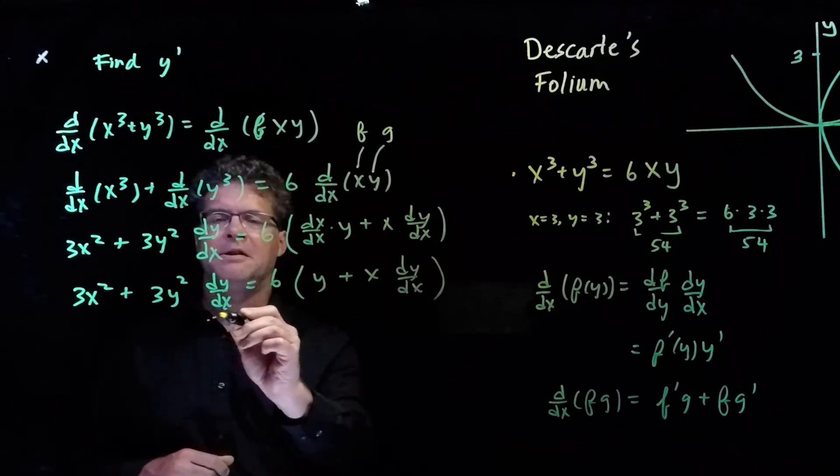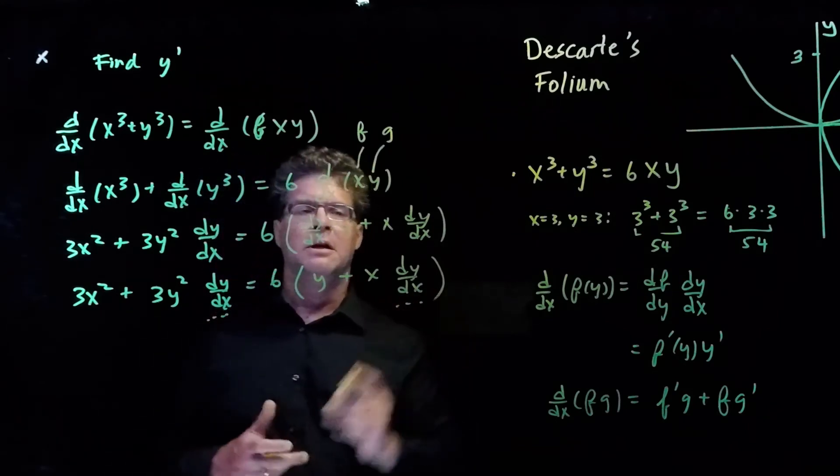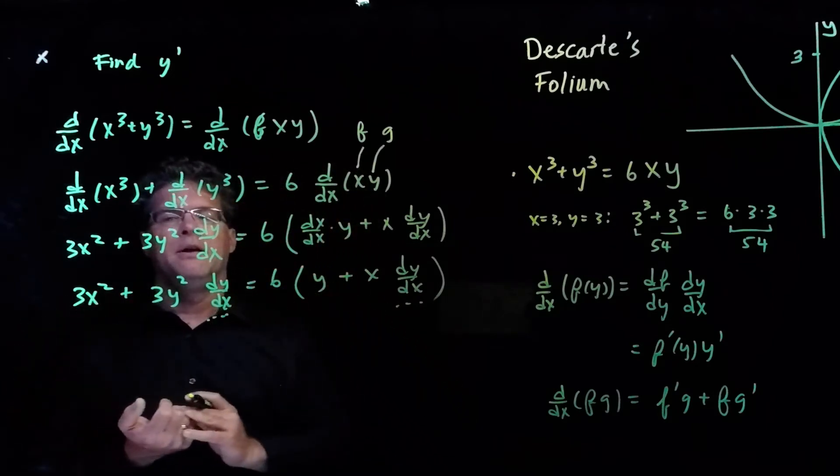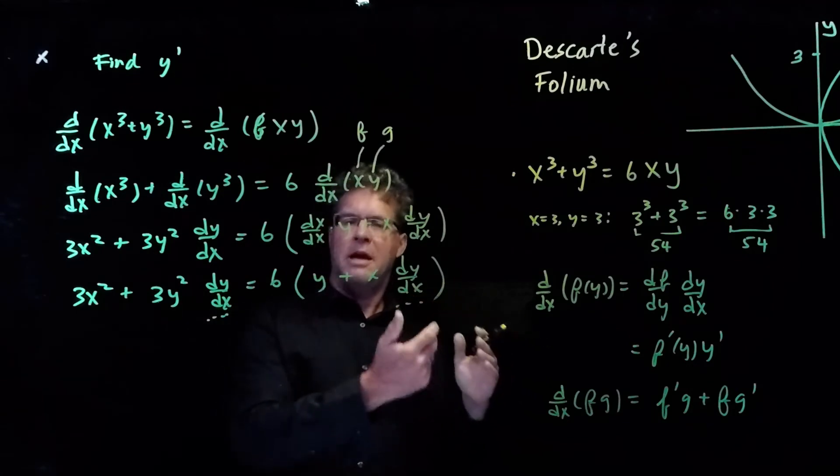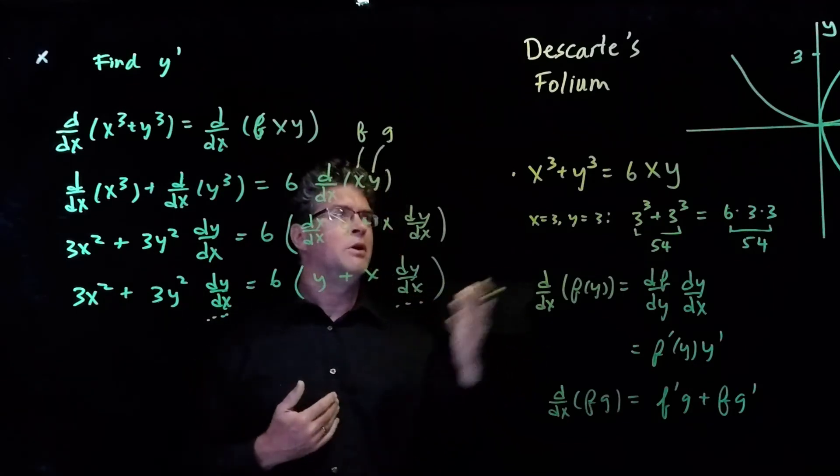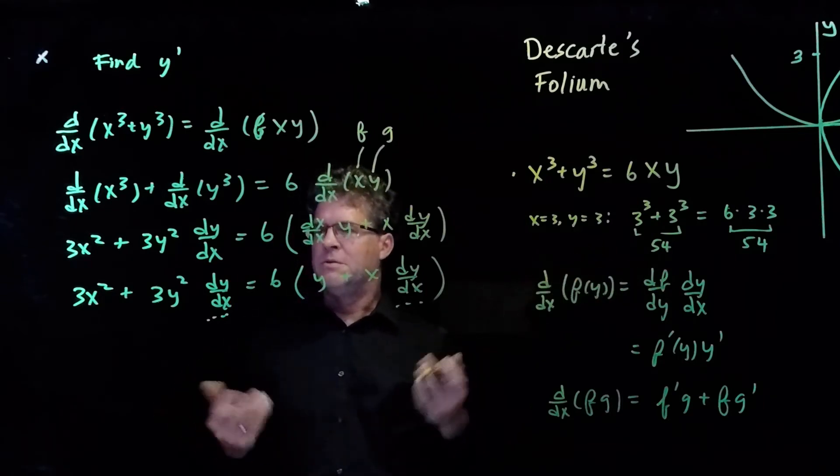Notice there's a dy/dx here, and there's a dy/dx here. So what we want to do is bring the dy/dx's over to the left-hand side, and we want to have the other terms on the right-hand side. That way we can isolate dy/dx and get a formula for it, to be able to write the equation for the tangent line.